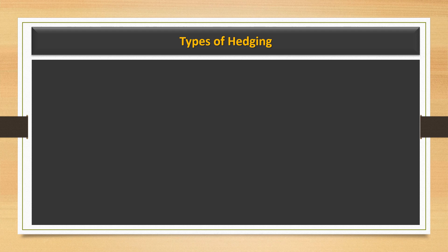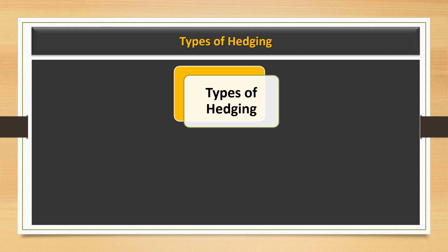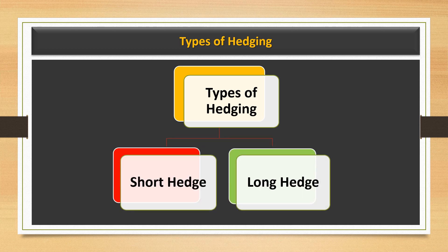On the basis of price action, hedging is classified into two types: short hedge and long hedge. When markets are moving up and there is bullish sentiment, hedgers go for a long hedge — they take a long position in the futures contract. But when there is an expectation of a fall in the market, a bearish move, hedgers take a short position — they go for a short hedge.